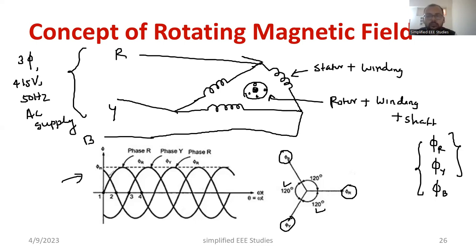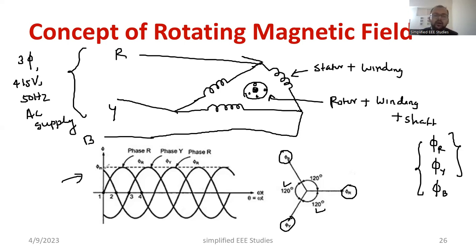Similarly, you can mention the flux also. Flux is also in a sinusoidal nature only because we are providing the sinusoidal supply. Obviously, flux also will be in sinusoidal waveforms. You may ask one question: why is the flux like a sinusoidal? Because the supply itself is sinusoidal — that is the answer.